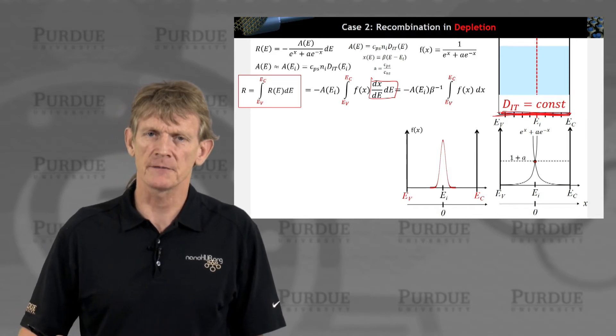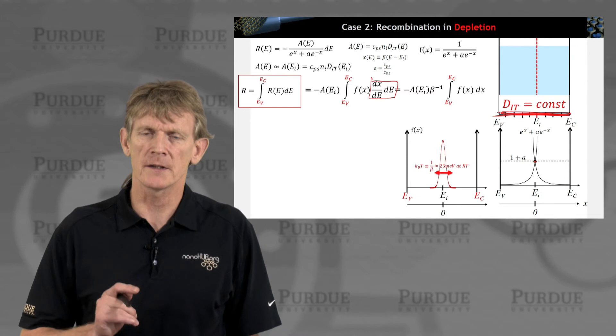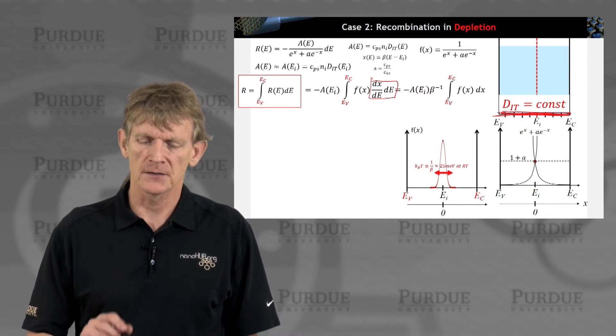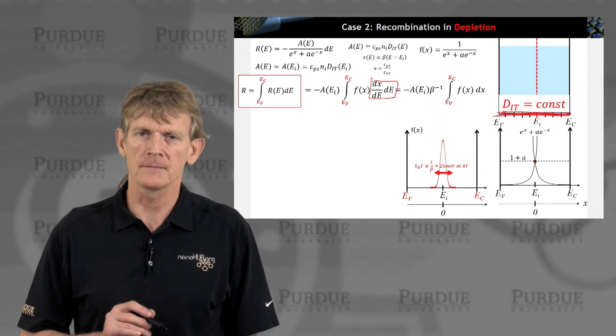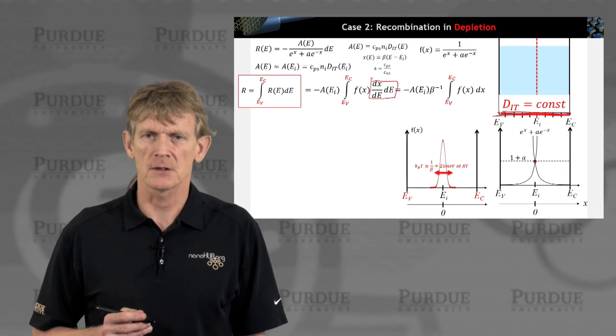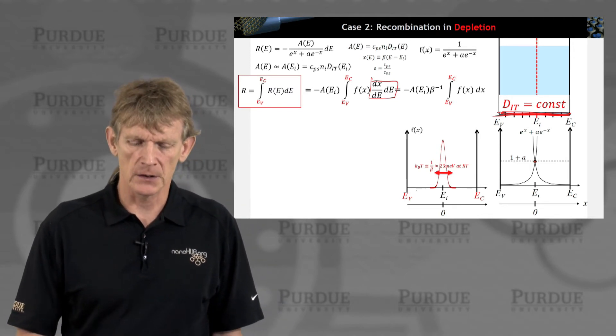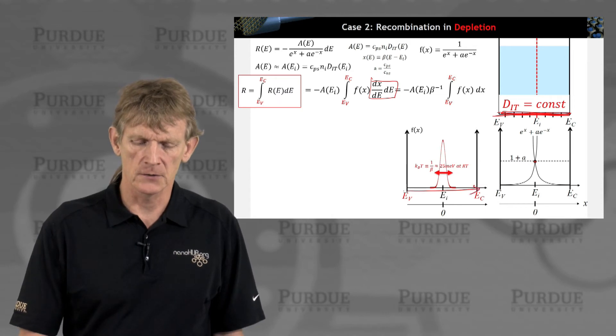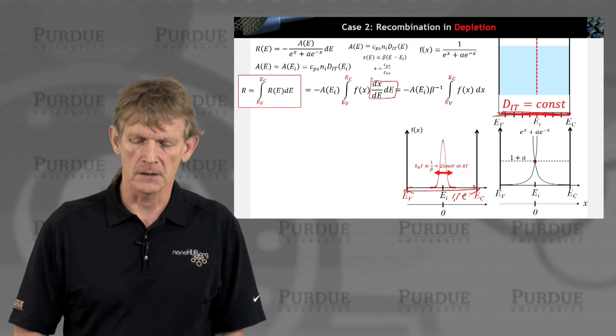This sharply spiked function has a certain width to it. That width is kT or 1 over beta, which is again 25 millielectron volts at room temperature. So 25 millielectron volts is pretty small compared to the total gap which is 1.1 eV.